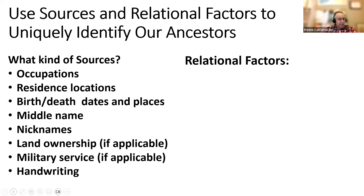Occupations can be a big help in identifying somebody, especially when you have a whole bunch of people with the same name. If the person you're looking for happens to be a plasterer — someone that plasters walls — that gives you a chance to use that as a way to separate him from other people with the same name.